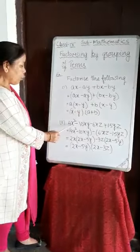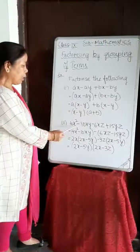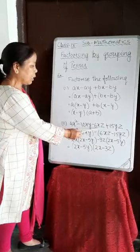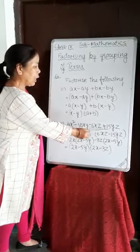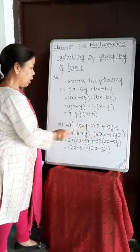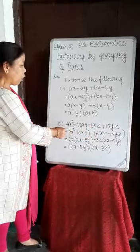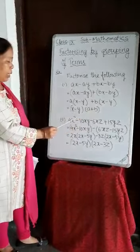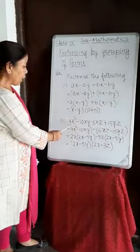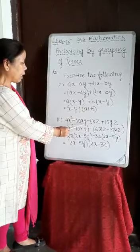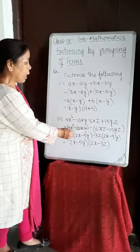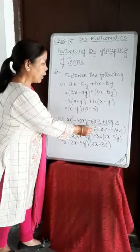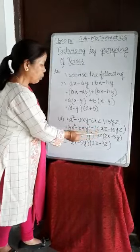See the second example: 4X squared minus 10XY minus 6XZ plus 15YZ. If we look at all four terms, nothing is common in all, so we will group them: 4X squared minus 10XY in one group, and minus 6XZ plus 15YZ in another group.